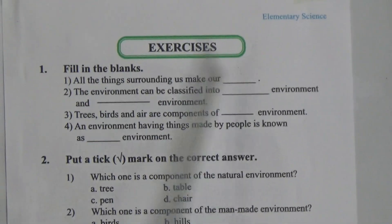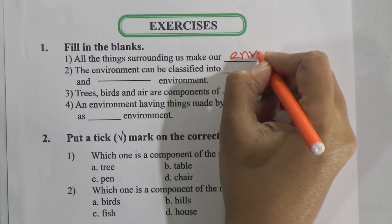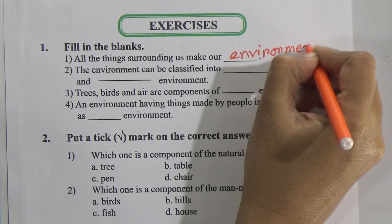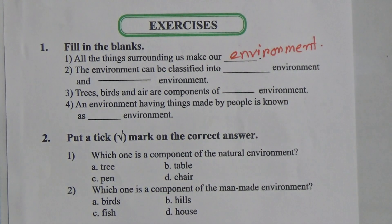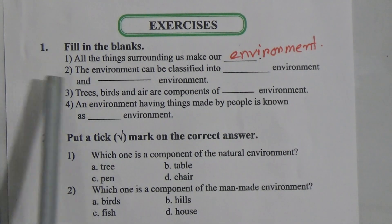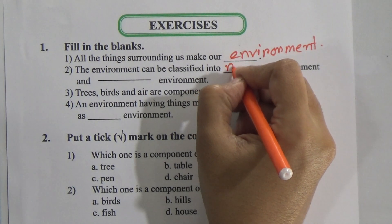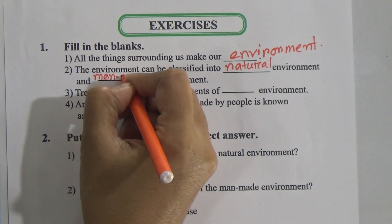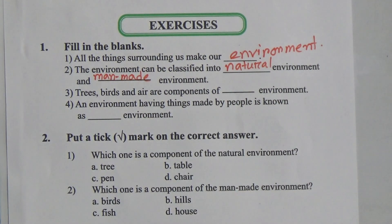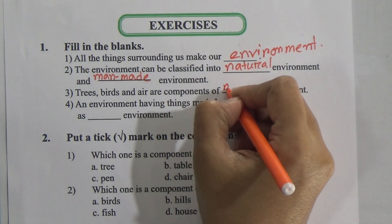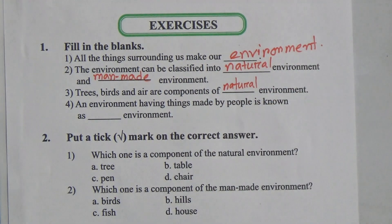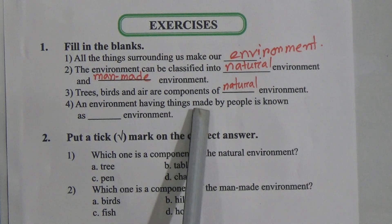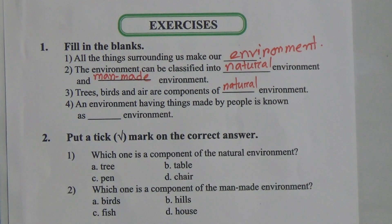Now come to the fill in the blanks exercise. First: 'All the things surrounding us make our ___.' Answer: environment. Second: 'The environment can be classified into ___ environment and ___ environment.' Answer: natural environment and man-made environment. Third: 'Trees, birds, and air are components of ___ environment.' Answer: natural environment. Fourth: 'An environment having things made by people is known as ___ environment.' Answer: man-made environment.